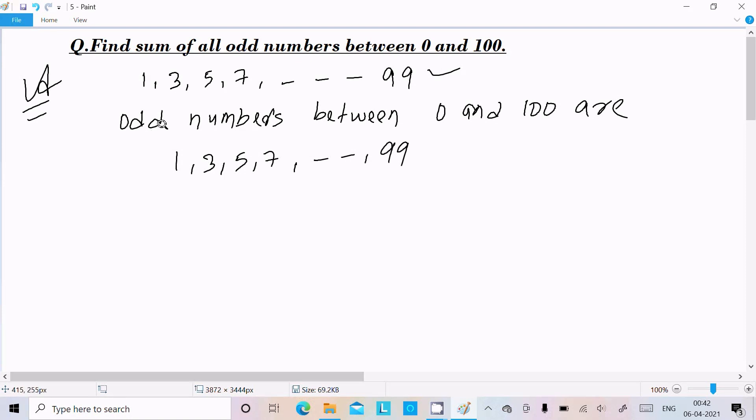Now we need to find the sum of all odd numbers: 1 + 3 + 5 + 7... If I calculate like this, it will be a more complicated, time-consuming process. So we'll use a formula.